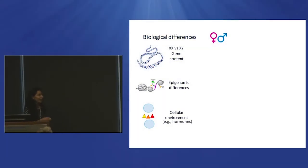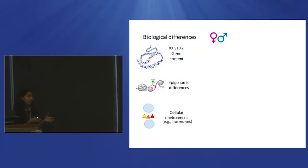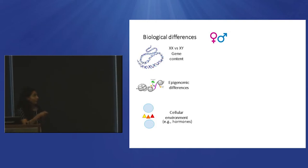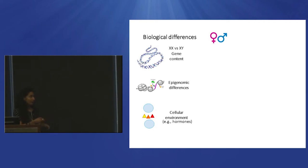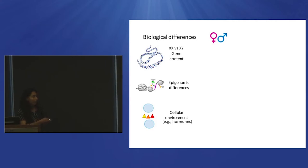We've heard today a nice summary that there are biological differences between males and females at various levels. We know that gene content is different because of X and Y sex chromosome differences, and some of these are in networks with genes and autosomes, resulting in epigenetic and gene expression differences. Even male cells and female cells are exposed to different environments — biological, environmental, and societal factors.